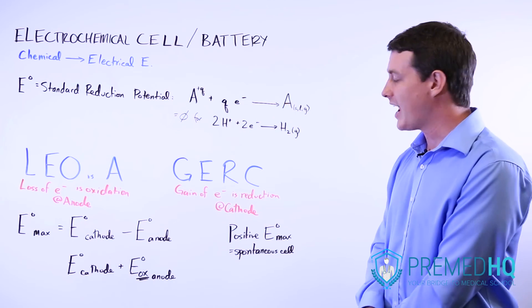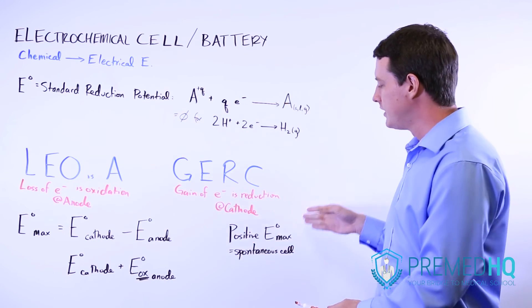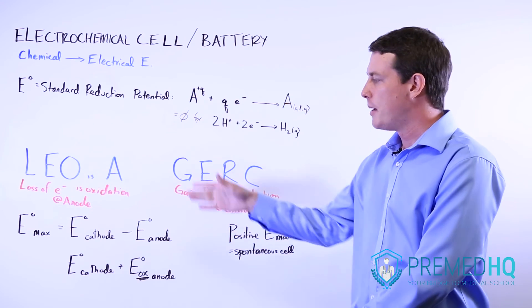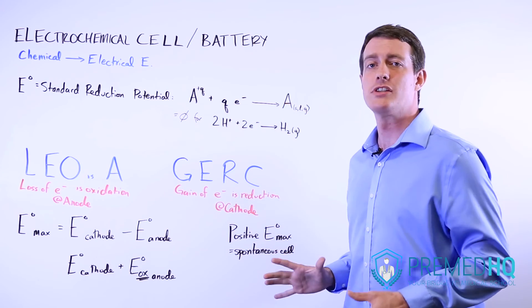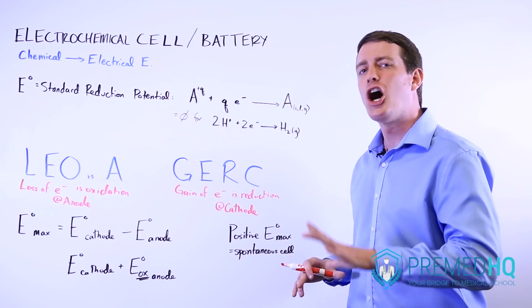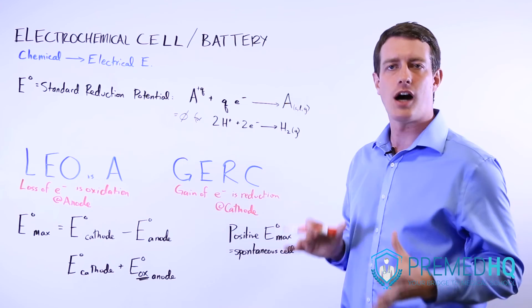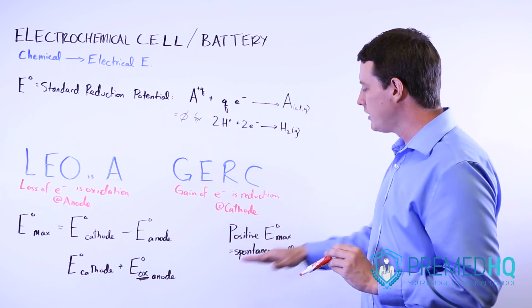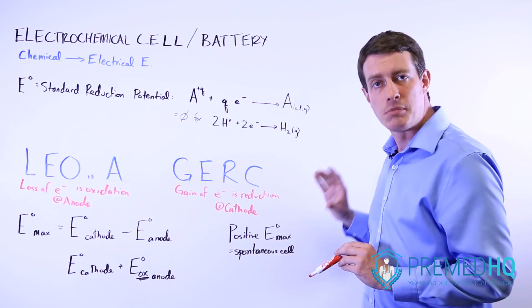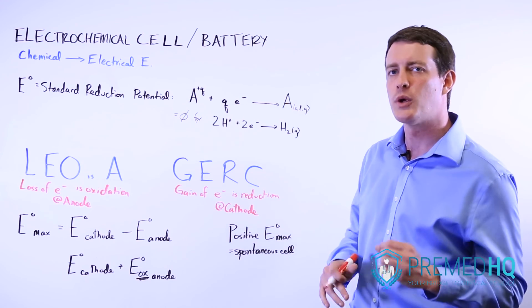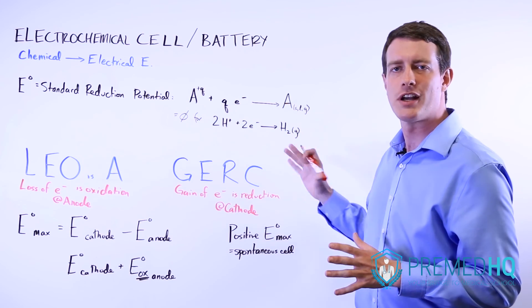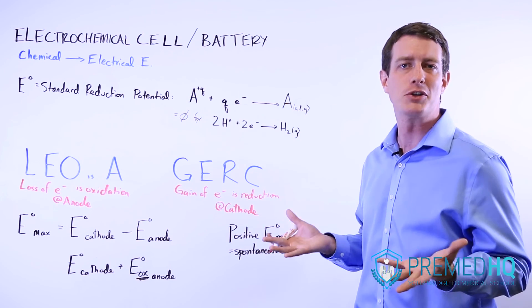The last thing to be aware of is that any time you have a positive standard reduction potential maximum, you're going to have a spontaneous battery. Now not all of these electrochemical cells are spontaneous, but if you have one that does operate spontaneously, it will have a positive Emax. And so be aware of that. And then we'll start going through the variations and the unifying principles of how electrochemical cells work.